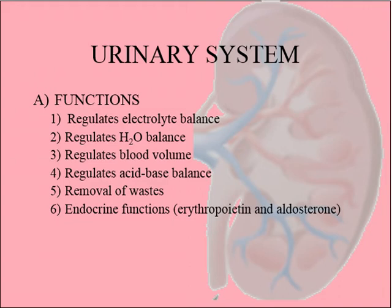The urinary system regulates electrolyte balance — it's critical for conserving potassium and other electrolytes. It also regulates water balance, blood volume, acid-base balance, removal of waste, and some endocrine functions.